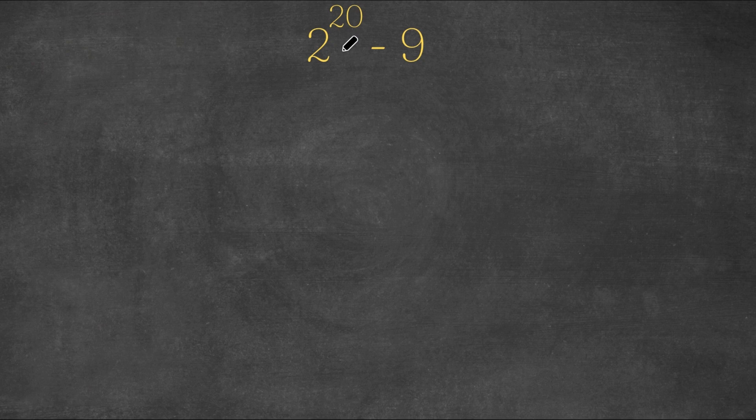So we have 2 to the power of 20 minus 9, and we want to find out what this equals.